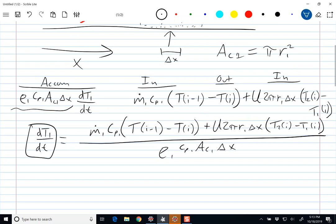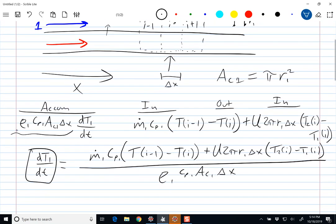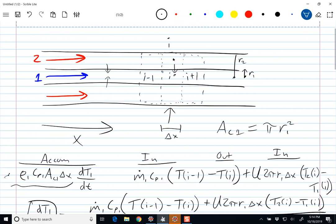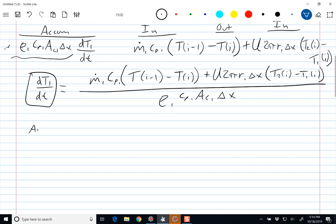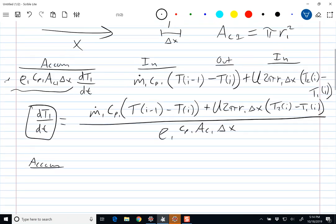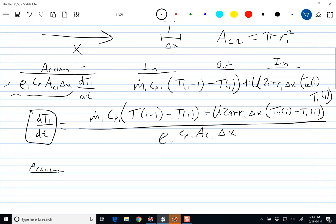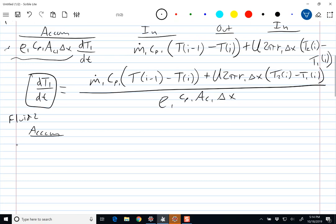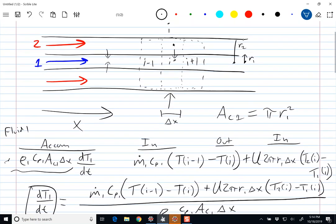Now we would do the same thing. We want to couple this energy balance equation with an energy balance equation for the outer tube. So we're going to do the same thing here. We're going to have an accumulation term. But now we're doing this for fluid 2.